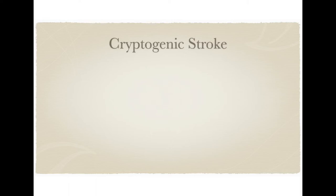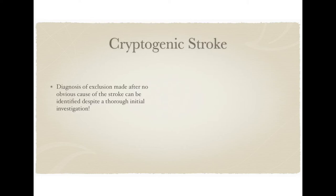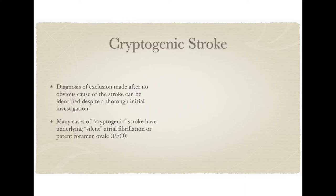The cryptogenic strokes are a diagnosis of exclusion made after no obvious cause of a stroke can be identified despite a thorough initial investigation. It turns out that many cases of cryptogenic stroke are actually associated with silent atrial fibrillation or patent foramen ovale, and often if further tests are done long-term, they can catch these conditions and an intervention can be performed to reduce the recurrence of stroke in these patients.